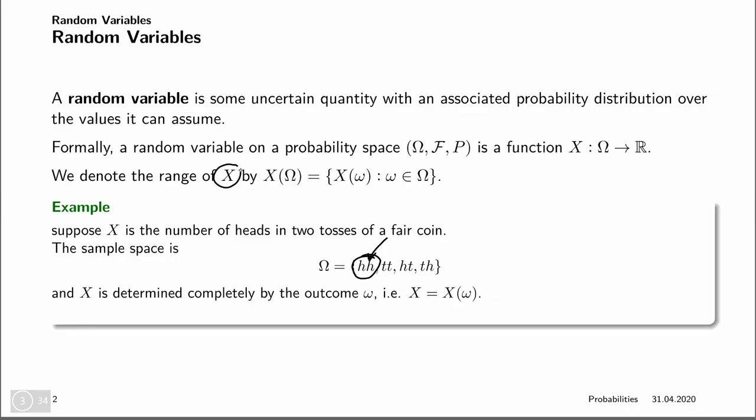We denote the range of this random variable x by x of omega — so it's the values of x whose inputs are elements of omega. Often, when we talk about random variables, we would actually not even mention the random experiment, or we would only talk about it implicitly. For example, if we say how often do you throw heads in coin tosses, that is a random variable — you often would not write down your sample space and so on. We would directly talk about x. However, these are inherently related.